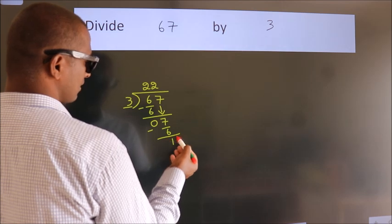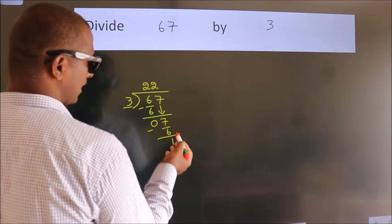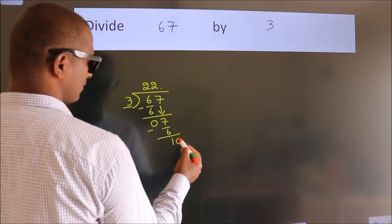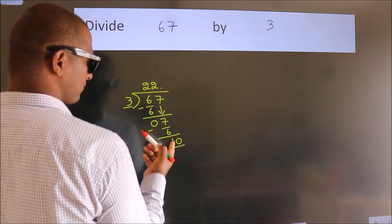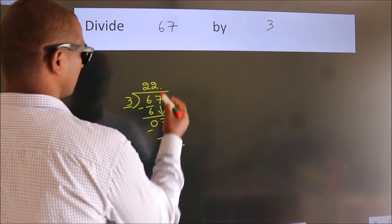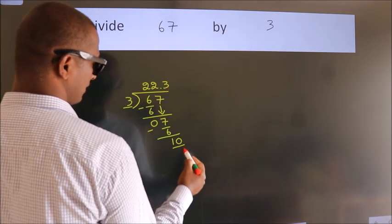After this, no more numbers to bring it down. So, what we do is, we put dot take 0. So, 10. A number close to 10 in 3 table is 3 3s, 9.